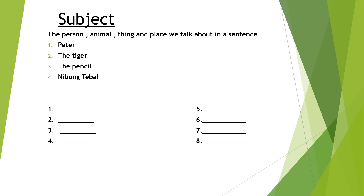Number three: there are so many books — these are things. Number four: a place. Number five: a person. Number six: these are animals.